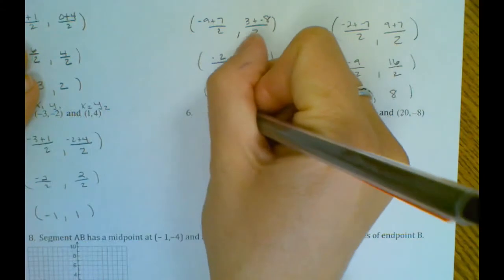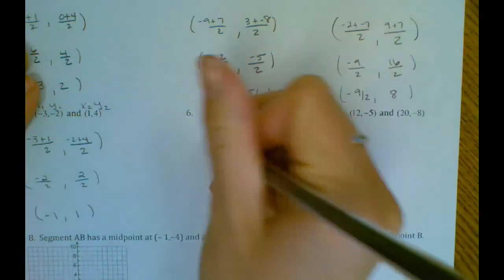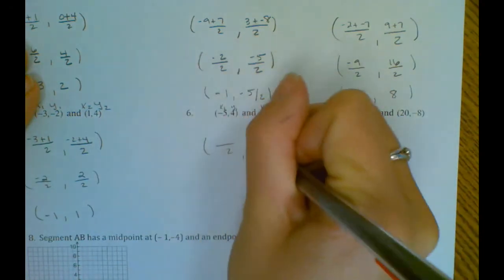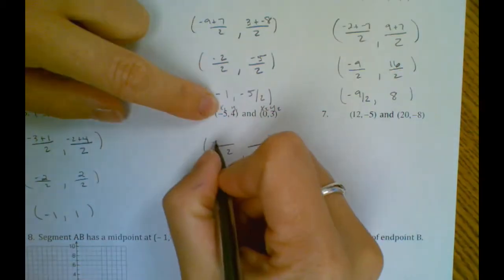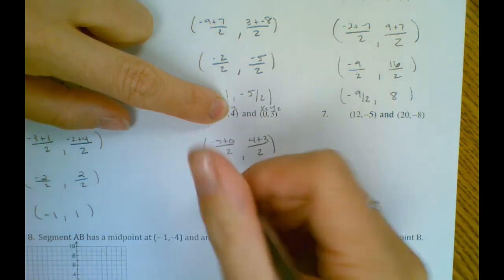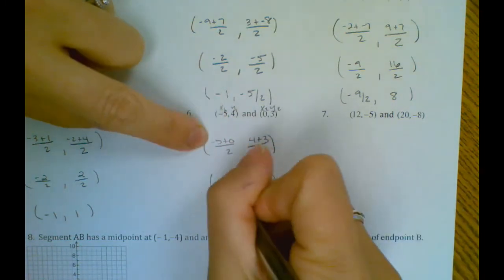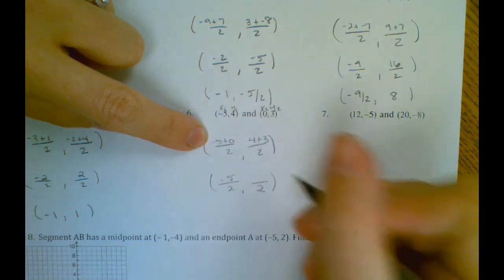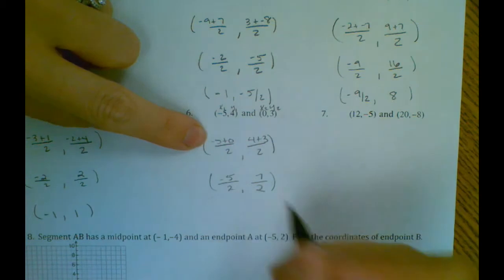Number six. Okay, so on top we have x1 plus x2 and y1 plus y2. So here we'd end up with negative 5 over 2 and 7 over 2. We can't reduce those anymore, so we'll leave it like that.